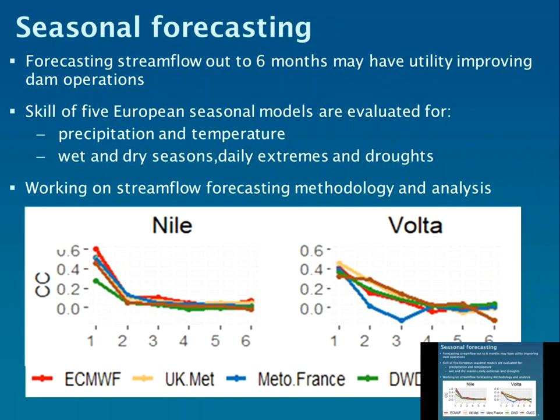We've been evaluating different seasonal climate models from a European database, initially for precipitation and temperature across wet and dry seasons, including daily extremes and droughts. The figures show examples for the Nile and the Volta, showing the skill — in terms of correlation coefficient — of forecasts against observed data for lead times from one to six months. ECMWF is shown in red alongside other models. Skill is reasonable at one month but declines as we go out to two, three, or four months.